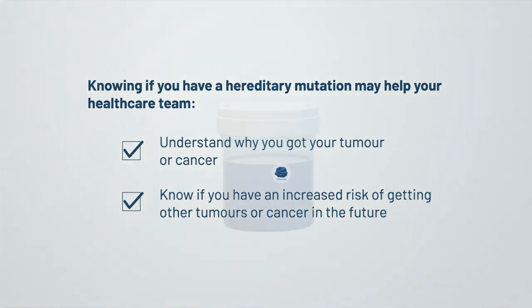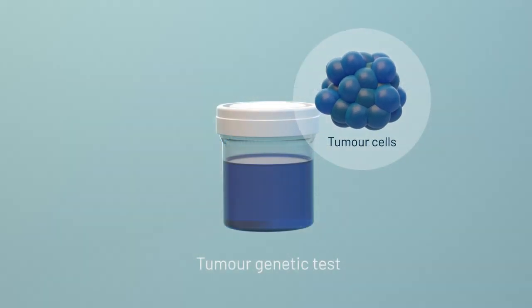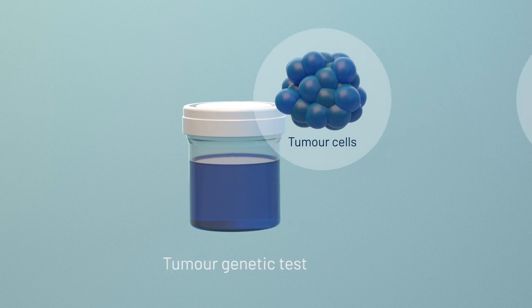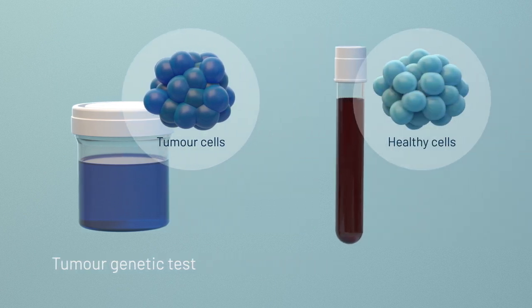A tumor genetic test alone cannot tell your doctors if mutations are acquired mutations or hereditary mutations. To do this, doctors can also do genetic testing on healthy cells called germline genetic testing. Germline genetic testing is usually done through a blood test.